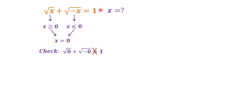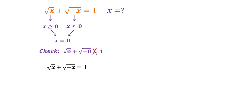The question is asking for complex roots, so let's find the complex roots of this equation. We square both sides, giving us: square root of x plus square root of negative x, squared, is equal to 1 squared.